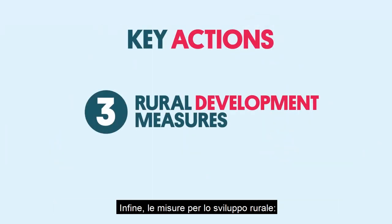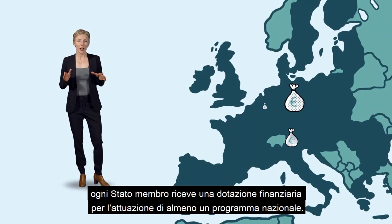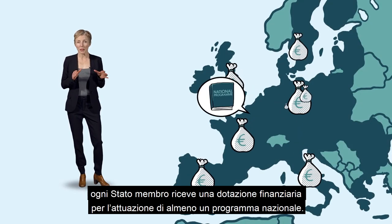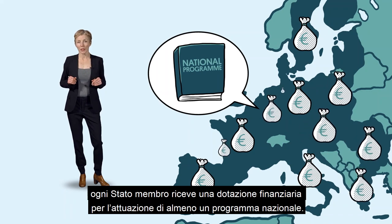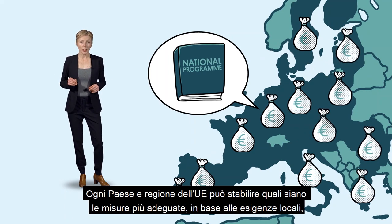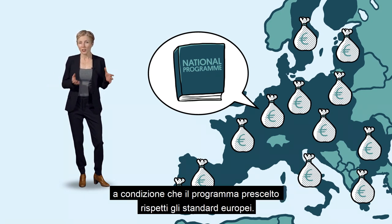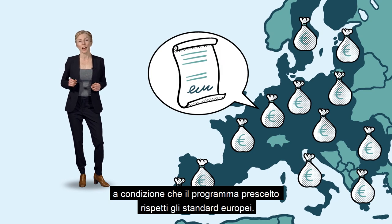And thirdly, rural development measures. Each member state receives a financial allocation to implement at least one national programme. Each EU country and region can decide which measures are best based on their regional needs, under the condition that the chosen programme falls in line with EU standards.